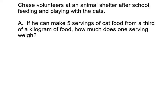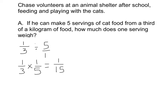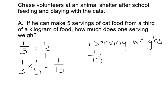I know that I have one-third of a kilogram of food, so I'm going to write down one-third. And I'm going to divide it by five, because I want to know how much one serving would be. So if I use the method of leave it, change it, flip it — this five is really a five over one. Then, when I multiply across, one times one is one, three times five is fifteen. So one serving weighs one-fifteenth of a kilogram.